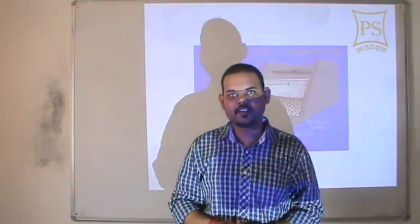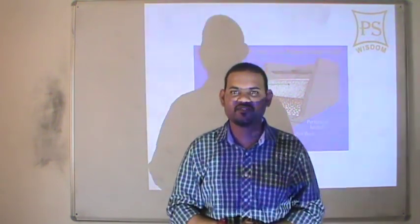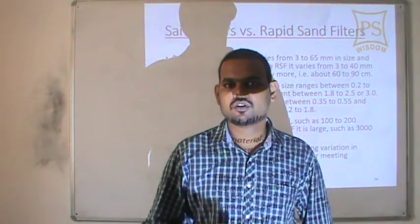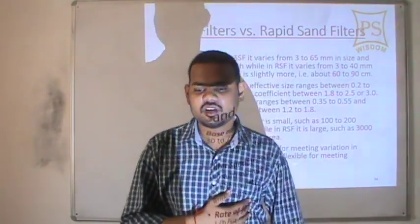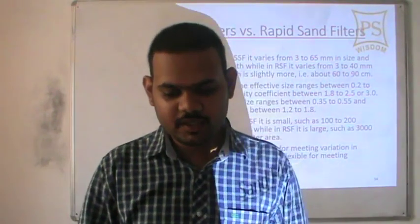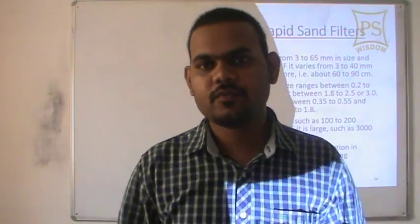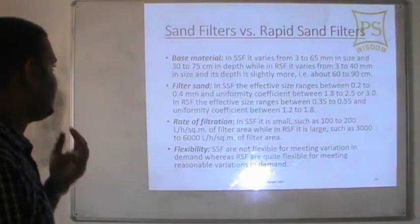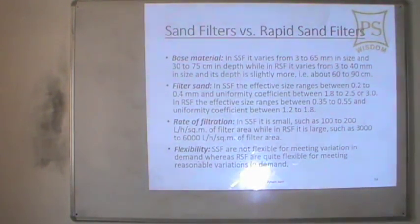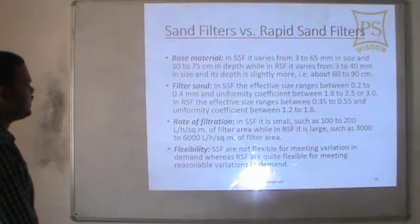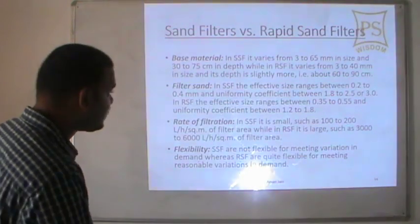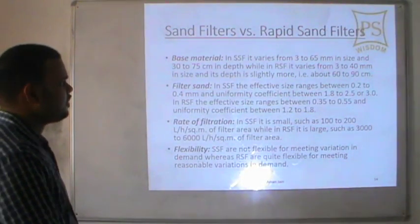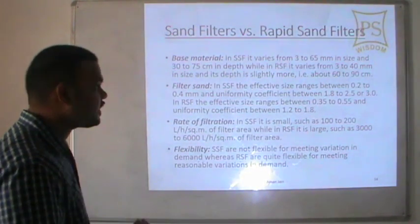Let's compare rapid sand filter (RSF) and slow sand filter (SSF) on several points. For base material: in SSF, gravel varies from 3 to 65 mm in size and 30 to 75 cm in depth; in RSF it varies from 3 to 40 mm in size and depth is 60 to 90 cm — so RSF has smaller gravel size but greater depth. For filter sand: in SSF, effective size ranges from 0.2 to 0.4 mm and uniformity coefficient from 1.8 to 2.5 or 3.0; in RSF, effective size ranges from 0.35 to 0.55 mm and uniformity coefficient from 1.2 to 1.8.